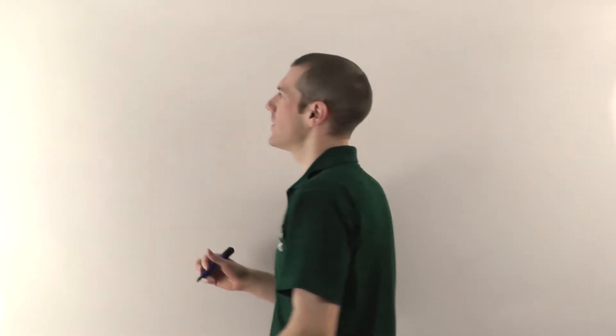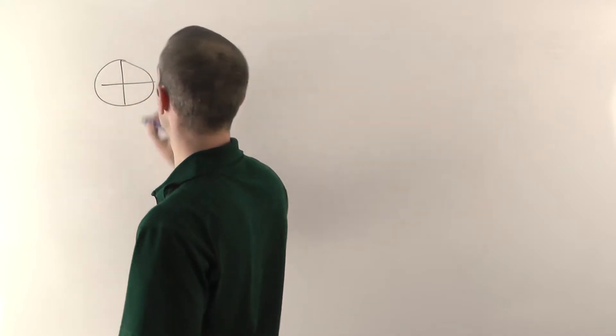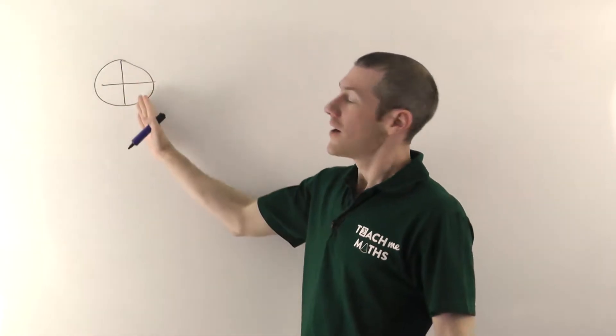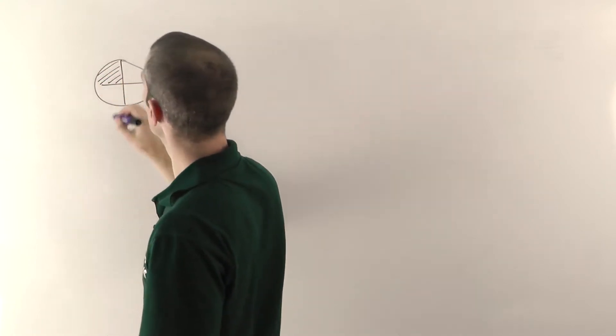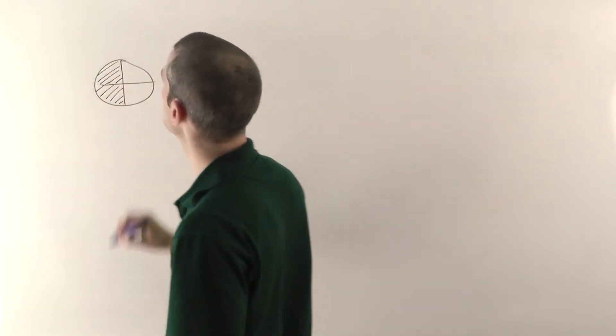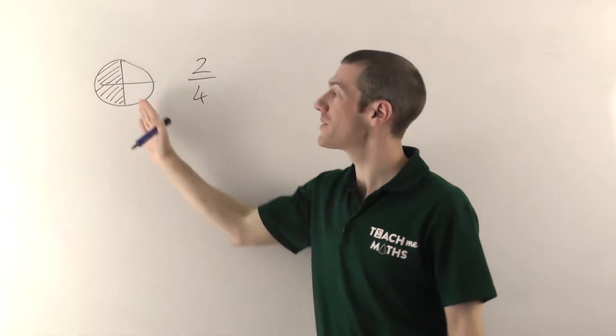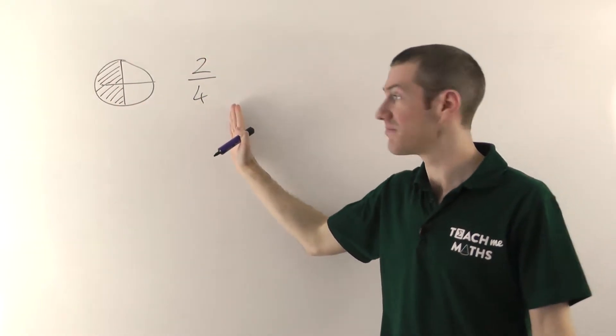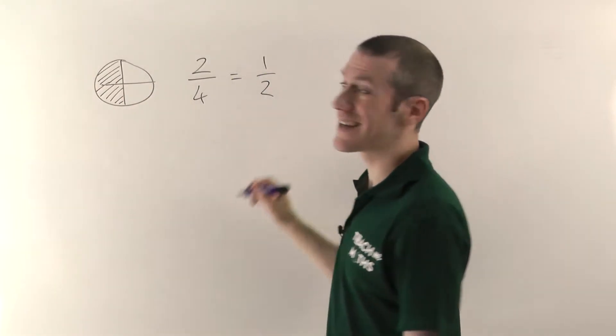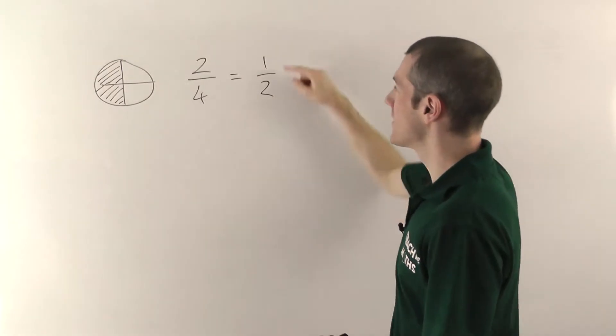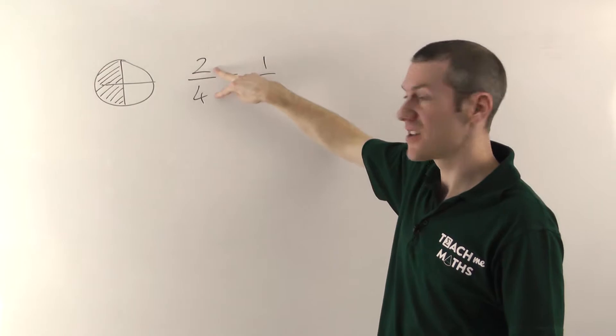So let me explain the basic concepts first. Let's imagine you've got a pizza again. A bit of a wonky pizza, but never mind. If we shade in two quarters of the pizza, there's one quarter and we'll shade in that quarter as well. So two quarters. You can probably see that this is the same as a half. Yeah, two quarters is still half a pizza. So these two fractions are in fact exactly the same thing.